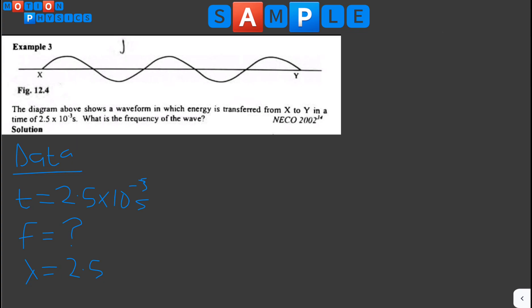Now, the next thing we need to know is the formula. There's a relationship: frequency equals number of wavelengths over time taken. So the formula is F equals number of wavelengths over time.